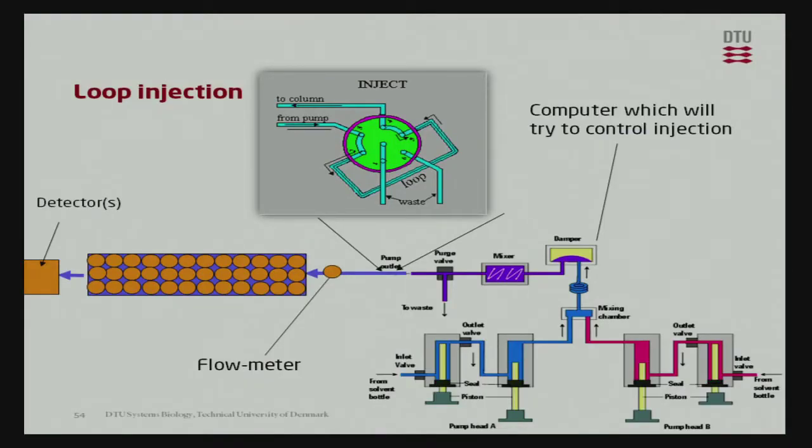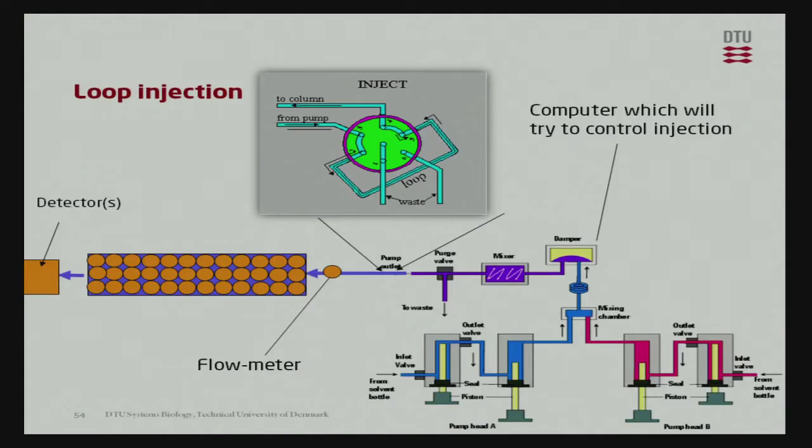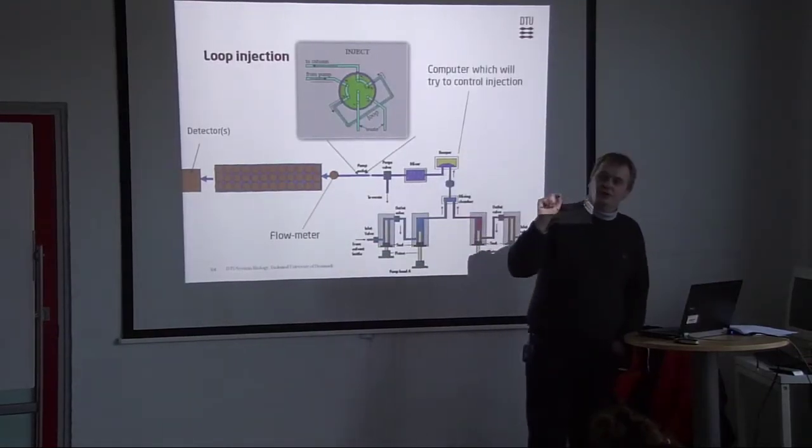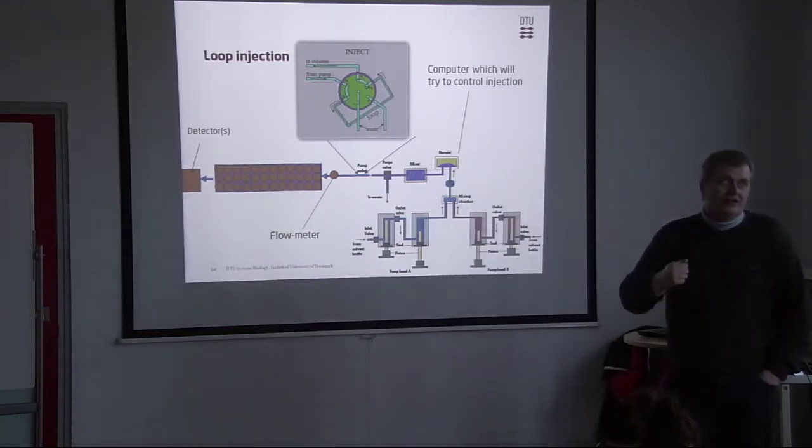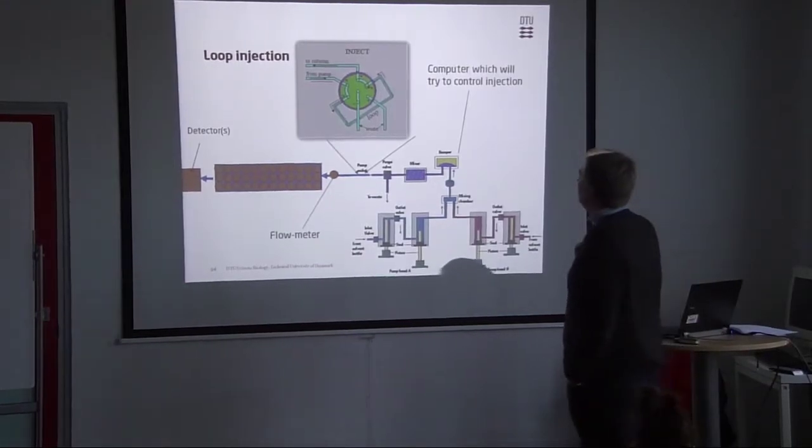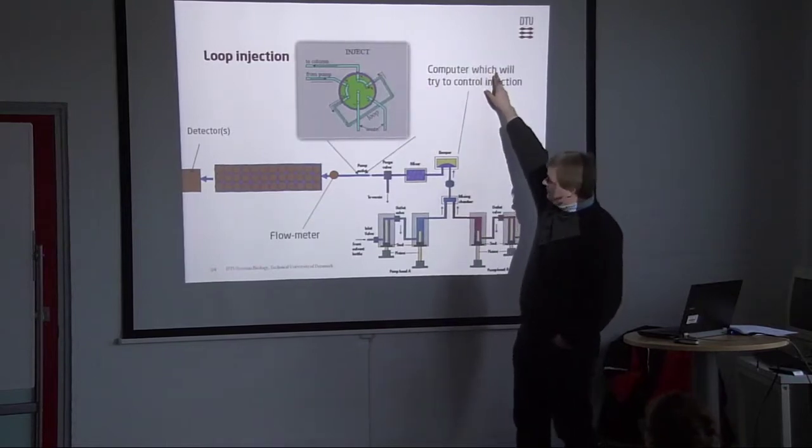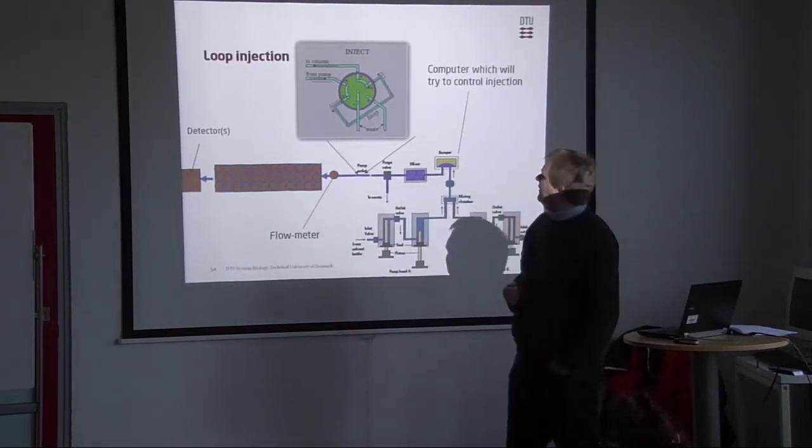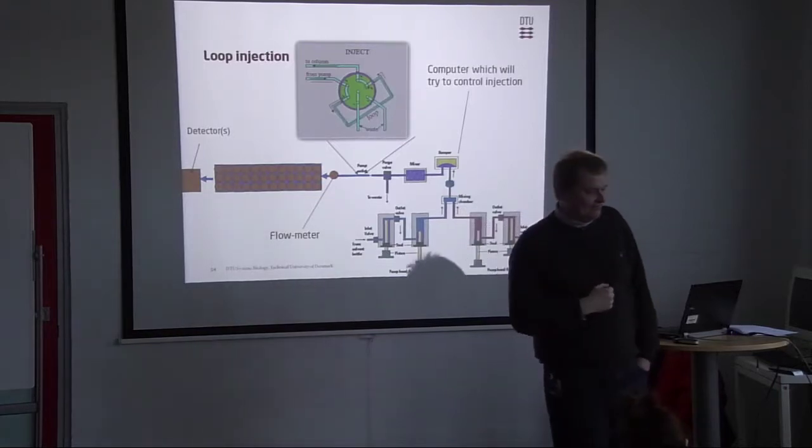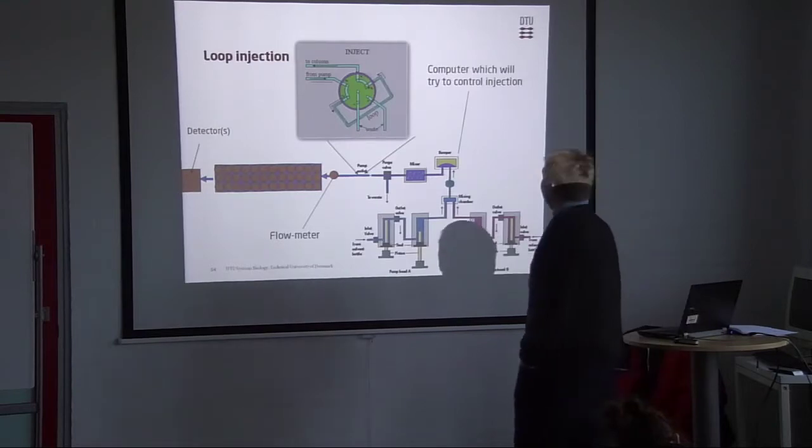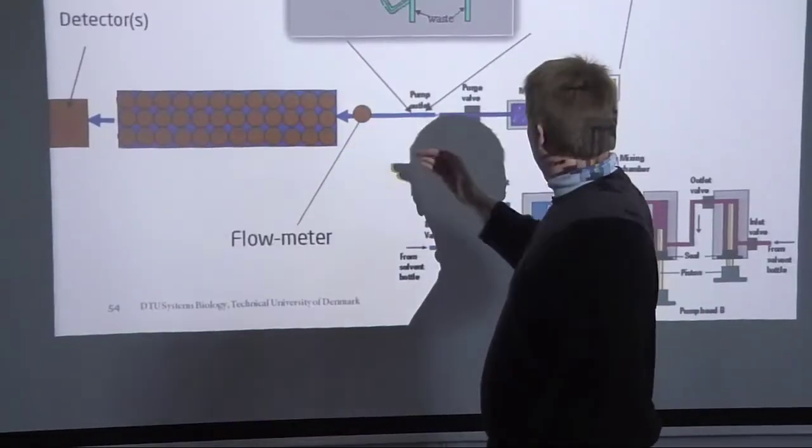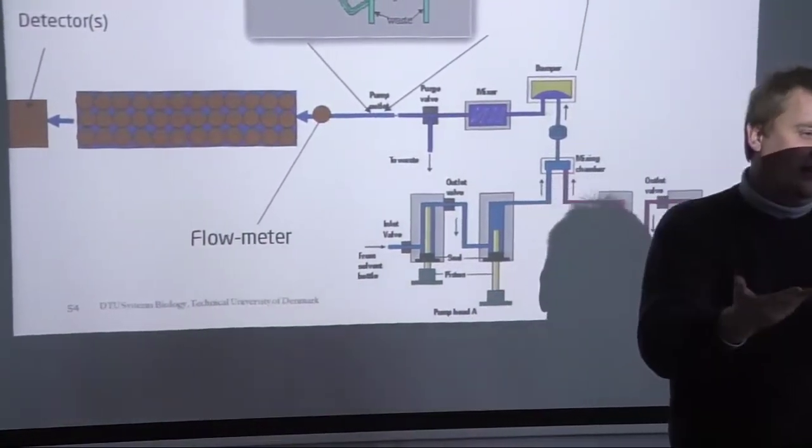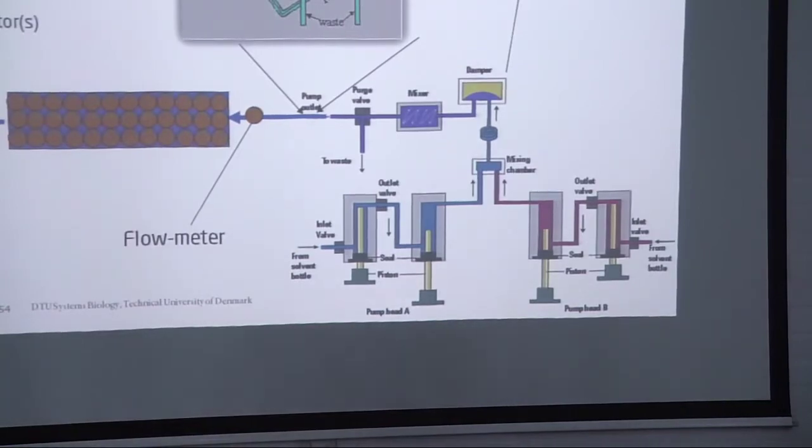So, a slightly more detailed HPLC system, and what you should recall is that all HPLC systems are computer controlled, and in general, most of them have a flow meter. So you type in, into the computer software, I want, let's say, 1 milliliter a minute, 0.1 milliliter a minute, that you type into the software. The flow meter will then actually give a reading to the computer, and if the flow is too low, it will increase the pressure of the pumps.